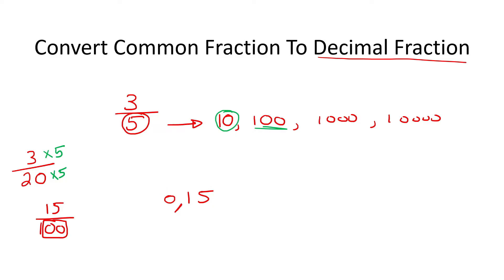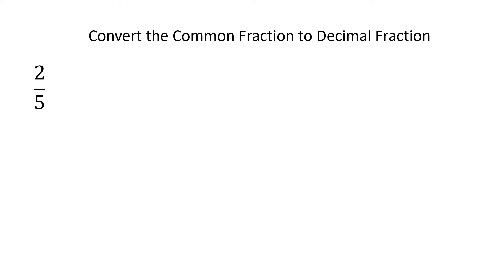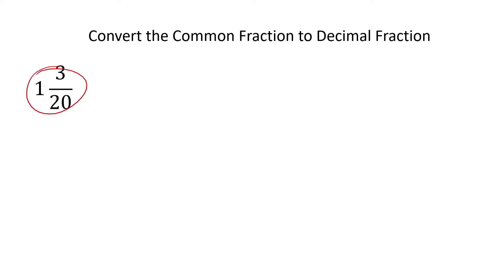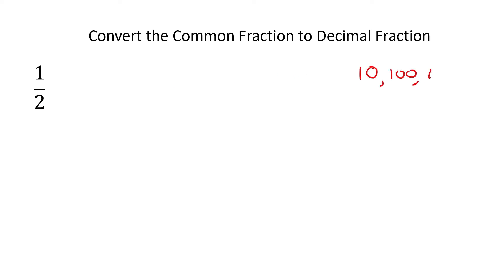Now, in these examples we're going to get some really interesting types where we have mixed numbers. We're also going to get an interesting one where we've got a number 8 at the bottom — a lot of learners struggle with that. So stick around, we've got some cool ones coming up. Remember, we want to get the number at the bottom to either be a 10, 100, 1000, or 10,000 — any number with a 1 and zeros. So the easiest here would be to multiply by 5.